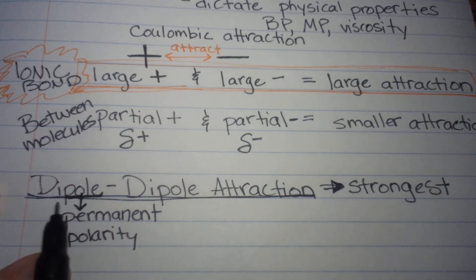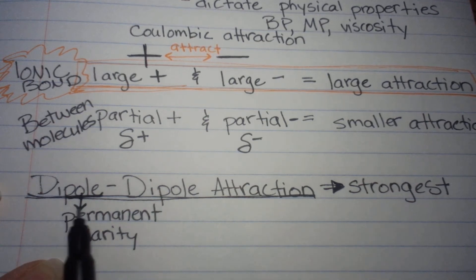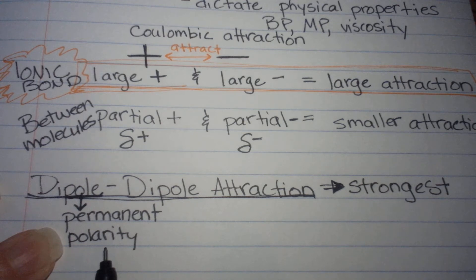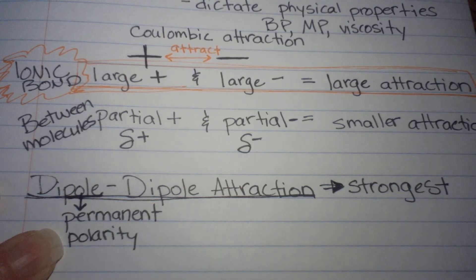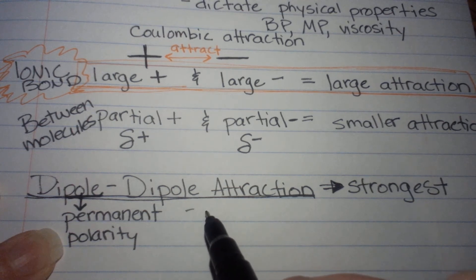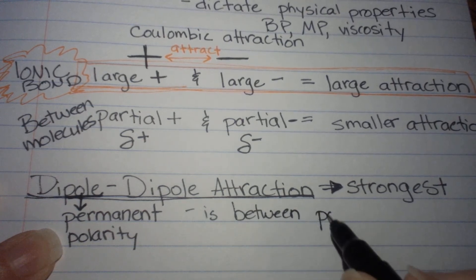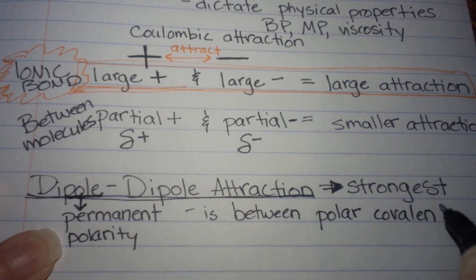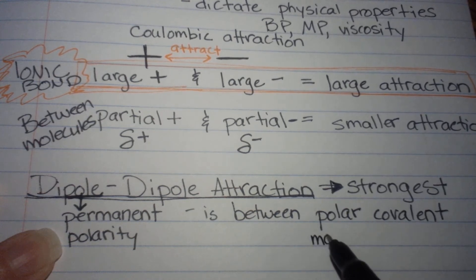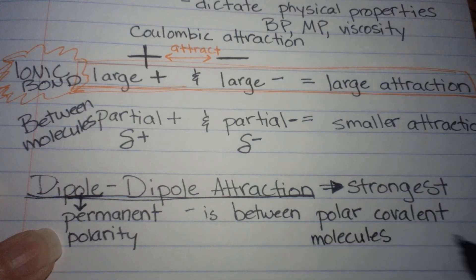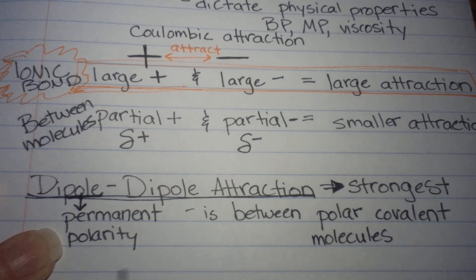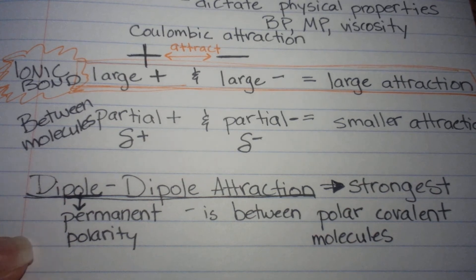If we are dealing with Dipole-to-Dipole Attraction, a dipole is a permanent polarity. This occurs between polar covalent molecules, because polar covalent molecules have a dipole — they have that permanent partial positive and partial negative.